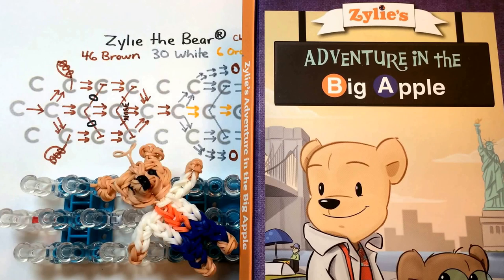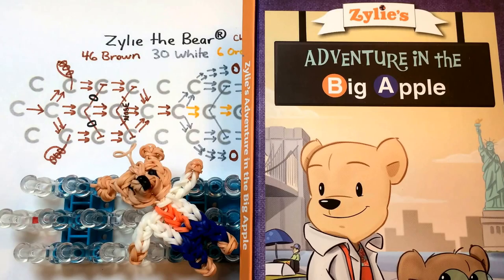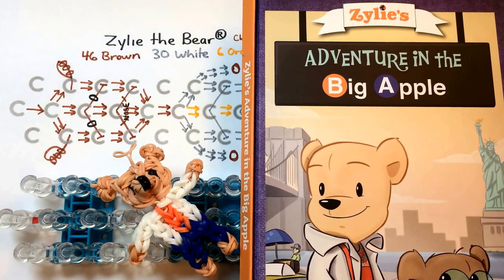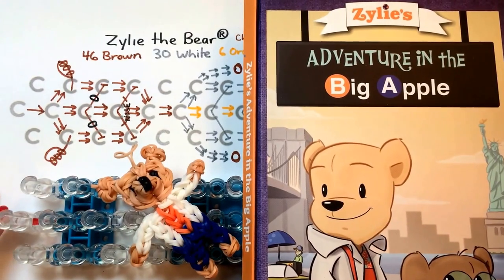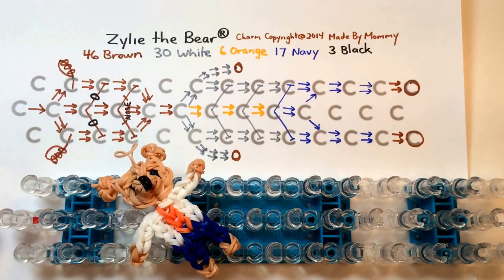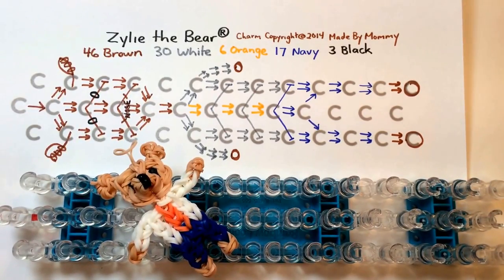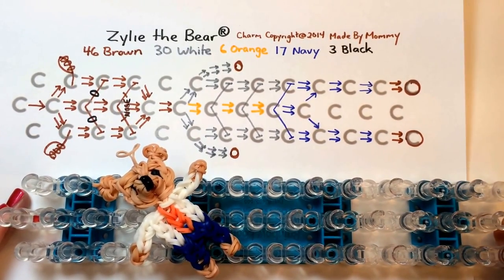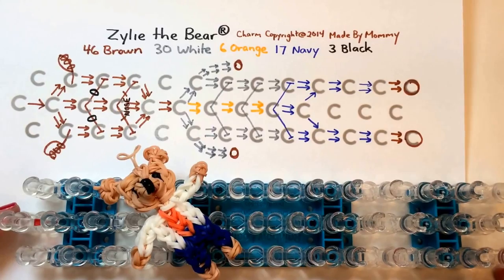I've created this figure for you to make at home as well. I'm going to make my Xylee the Bear charm on my rainbow loom, but the rainbow loom will be set up in the staggered position so that those of you with other looms should be able to follow along as well.